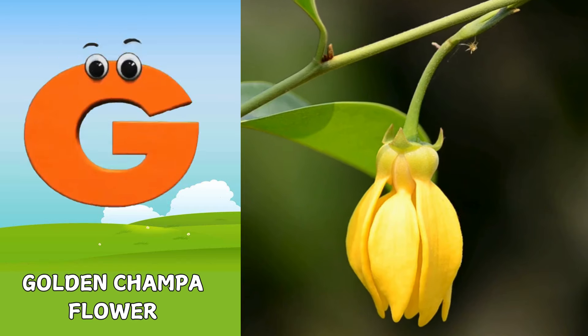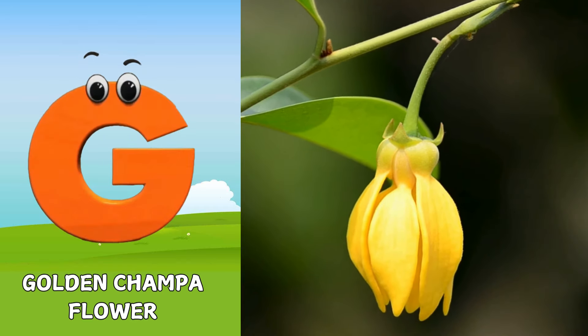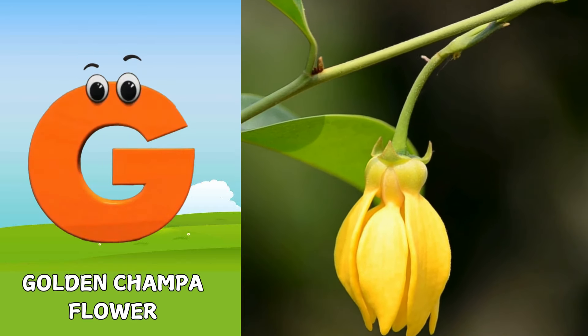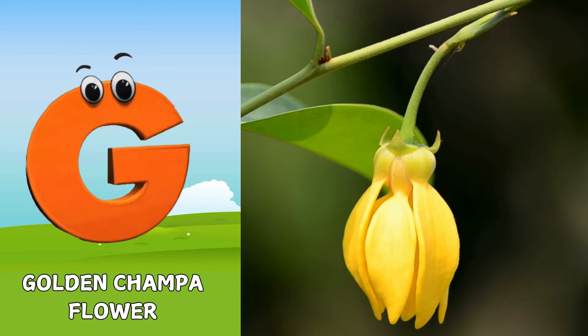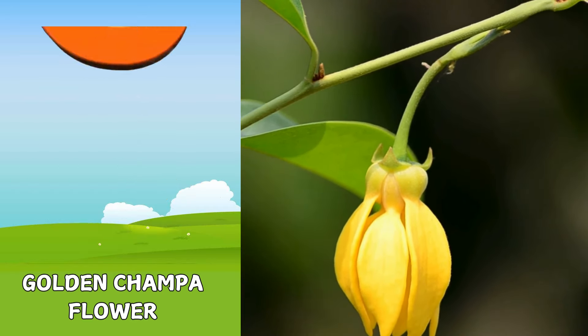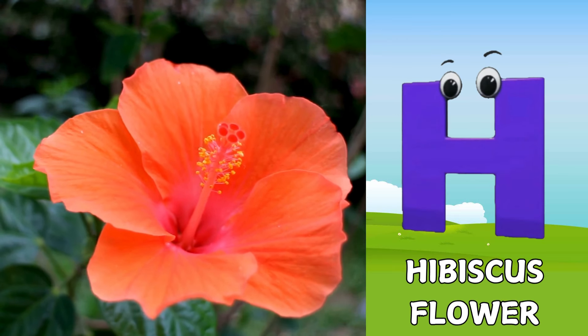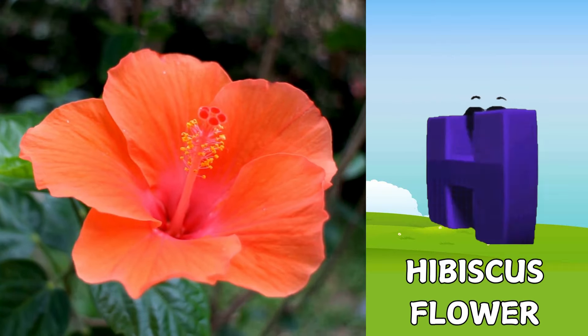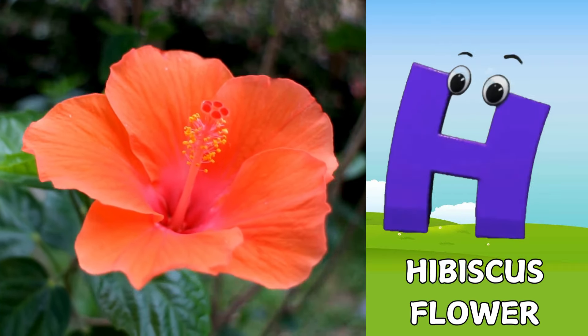Foxglove flower. G is for golden compa flower. Guh, guh. Golden compa flower. H is for hibiscus flower. Ha, ha.